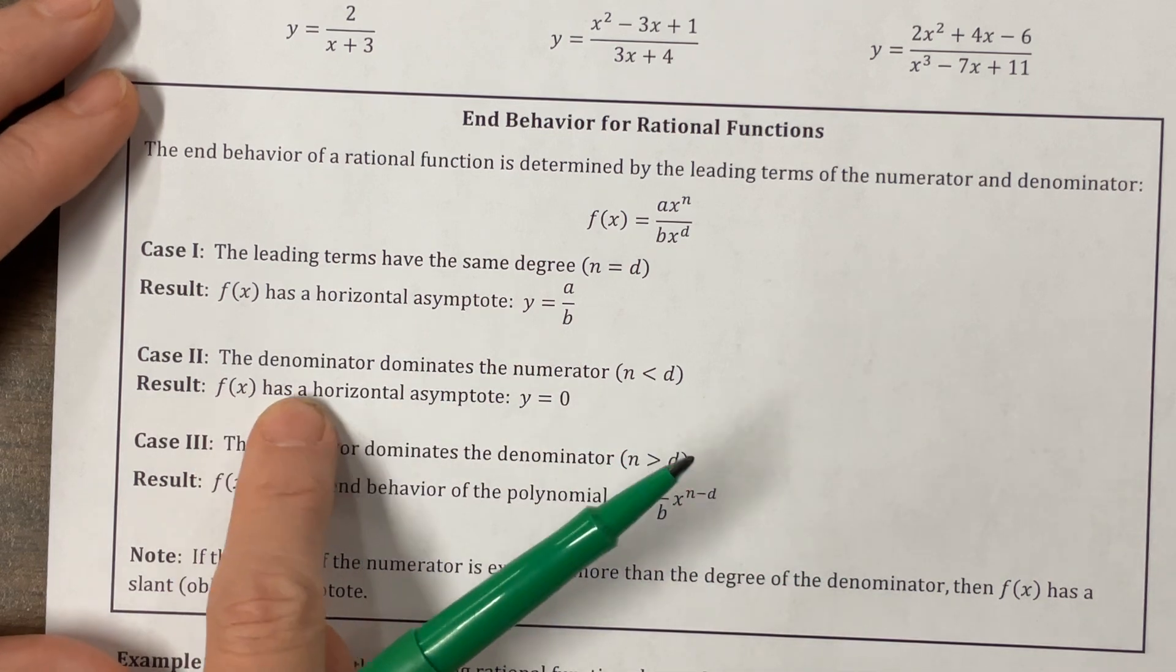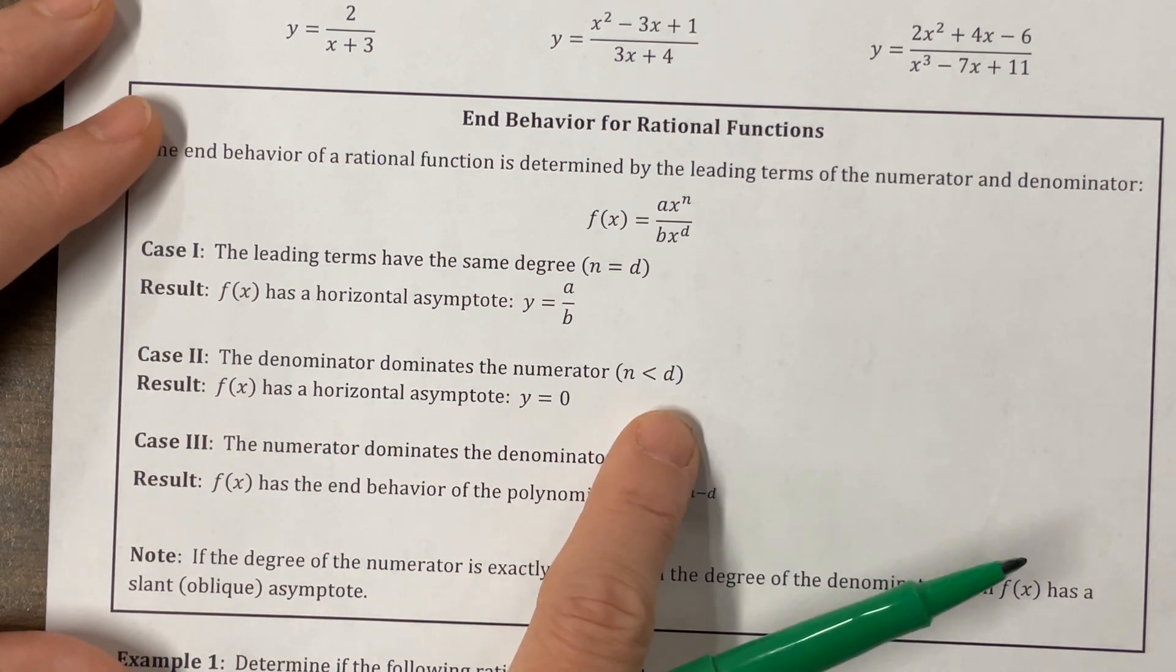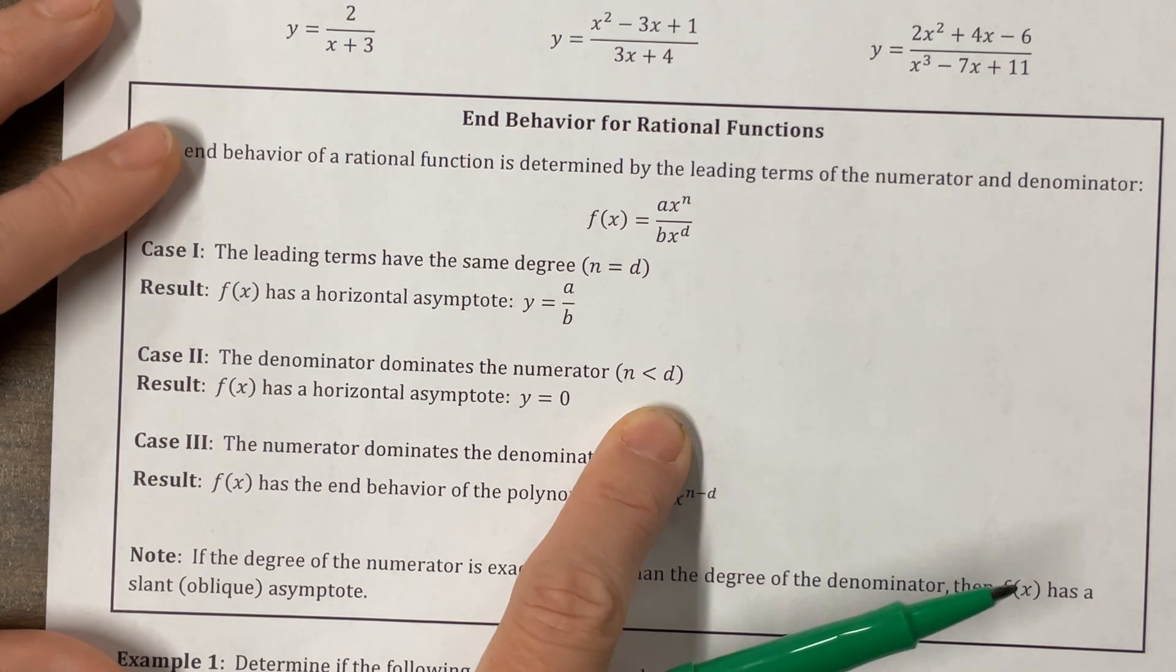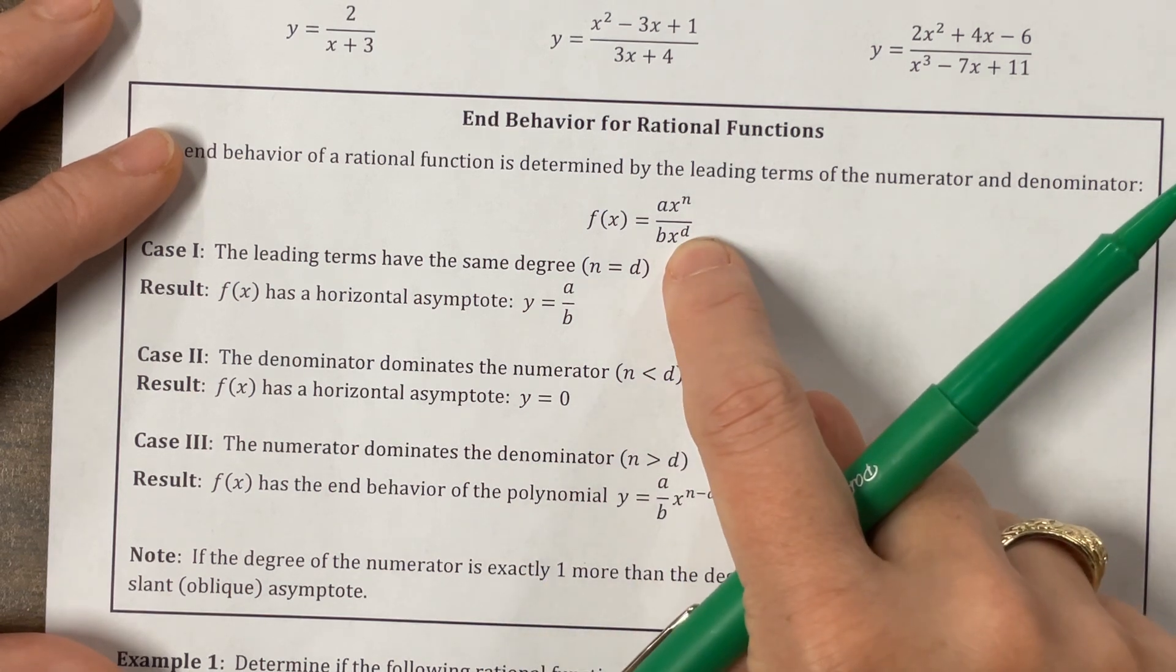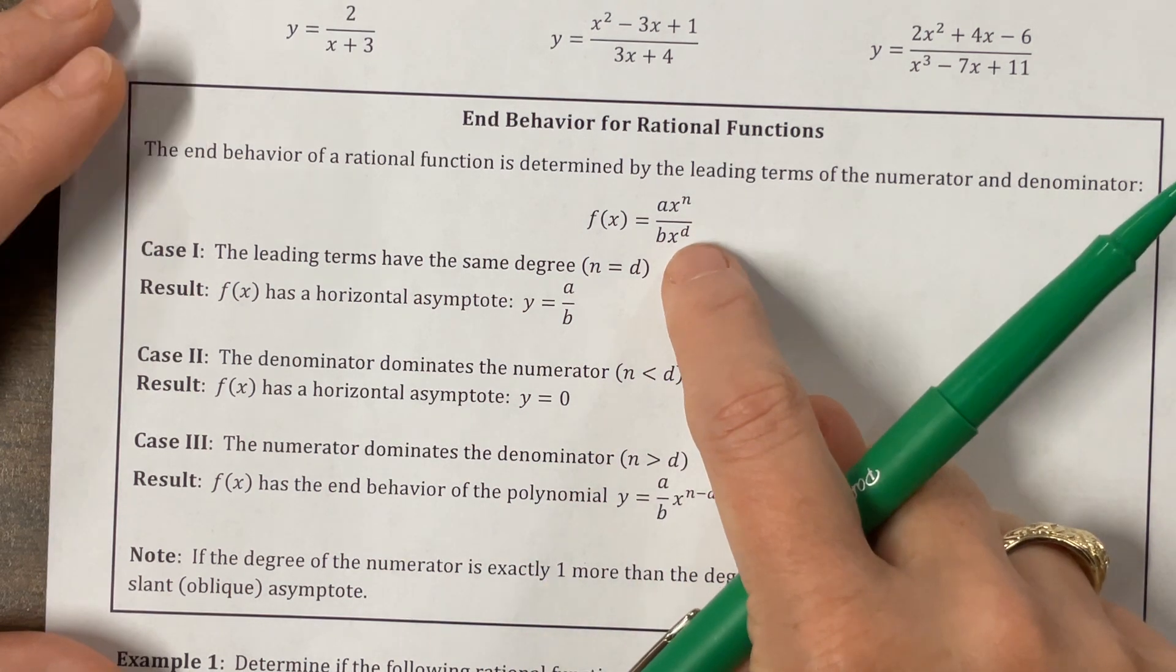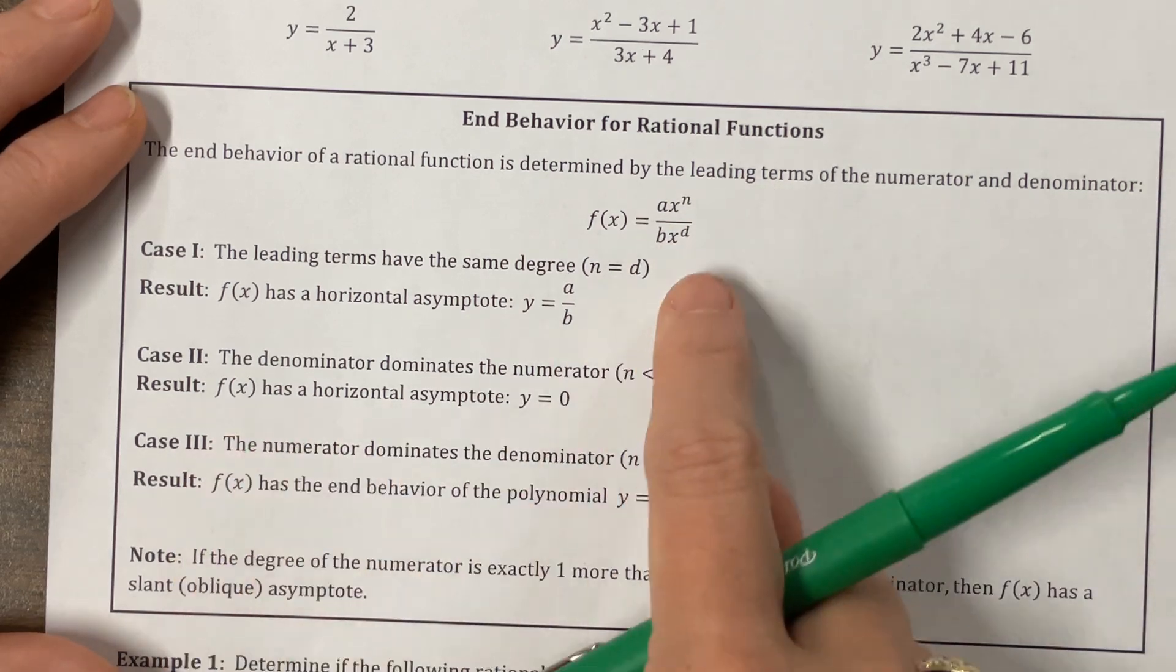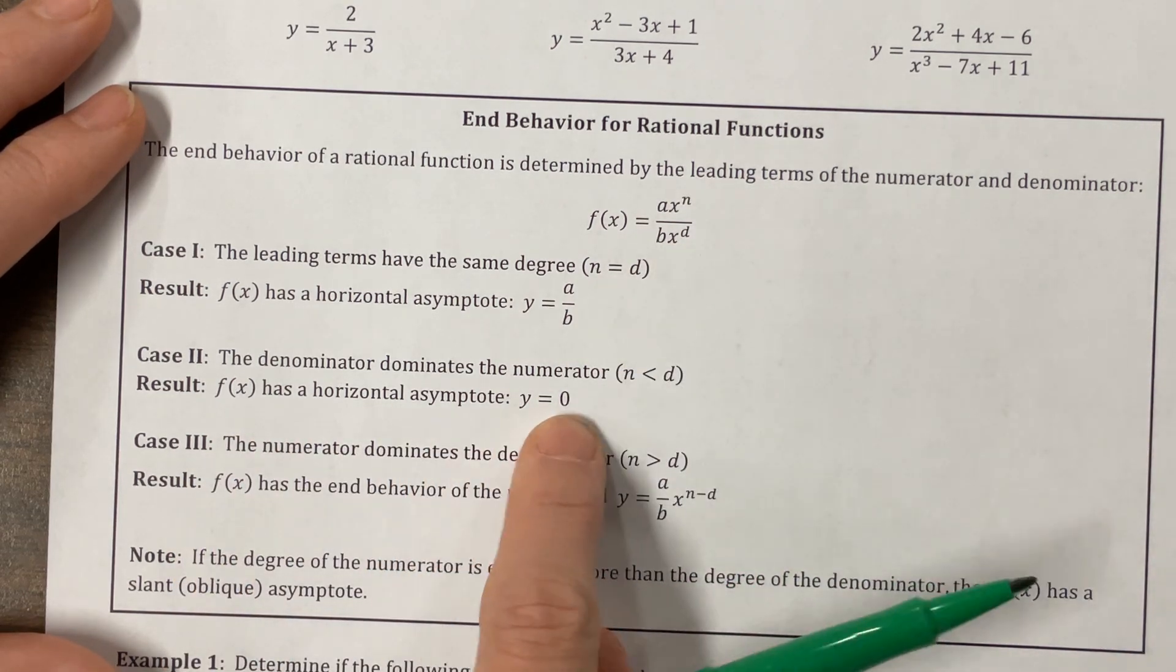Okay, in case two, the denominator dominates the numerator. They use that notation, but basically the degree of the denominator is greater. Yes, the denominator, I call this bottom heavy. So the degree of the denominator is larger than the degree of the numerator. If the denominator has a larger degree, if it's bottom heavy, then it's y equals zero.